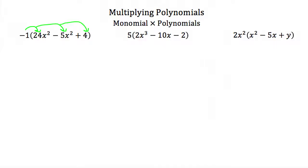So when we do that, we'd have negative 1 times 24x squared, which would be negative 24x squared. Negative 1 times negative 5x squared would be positive 5x squared. And negative 1 times 4 is just minus 4.